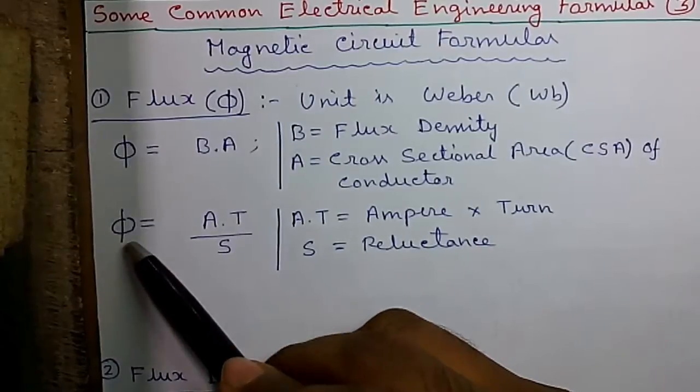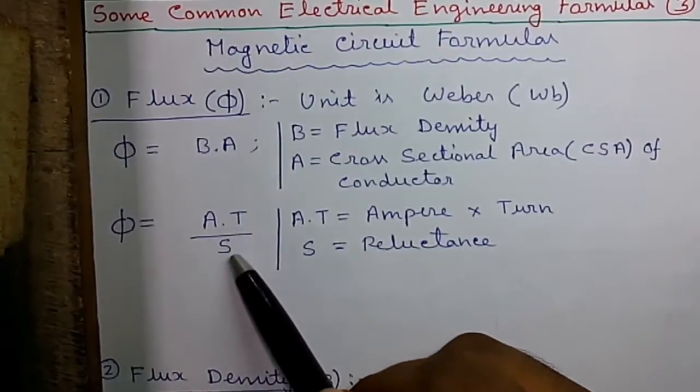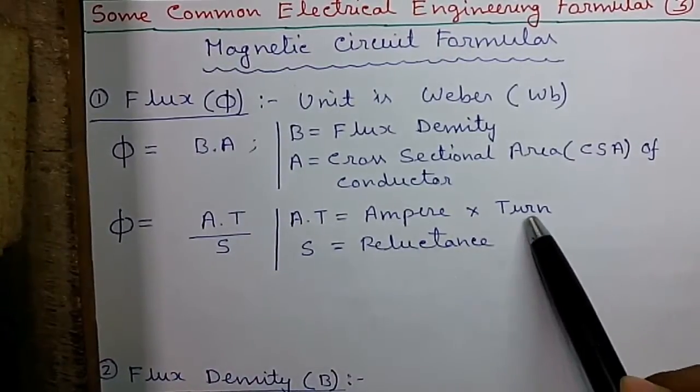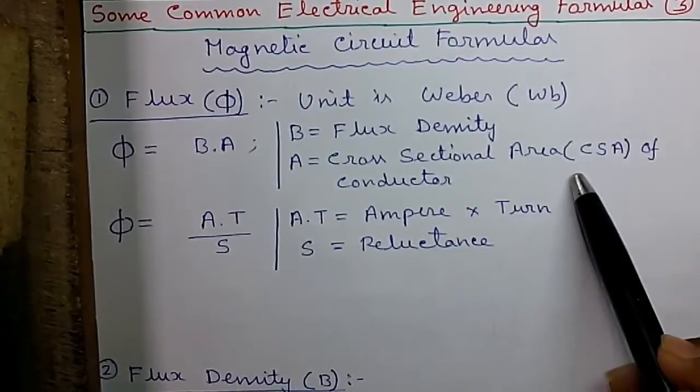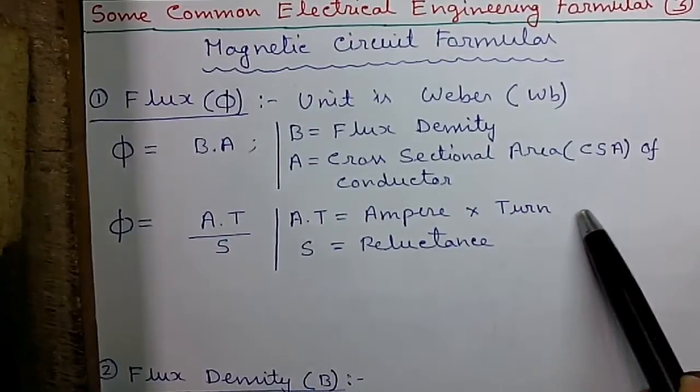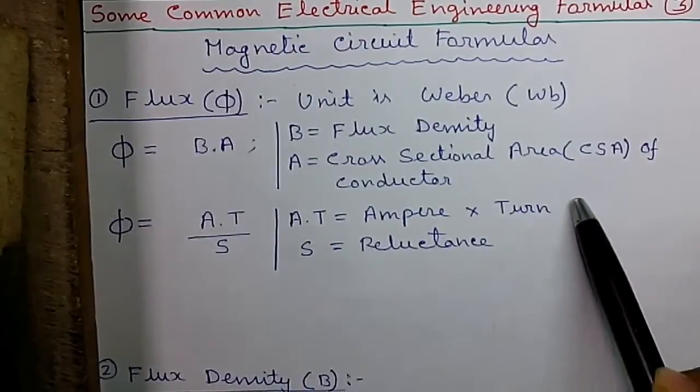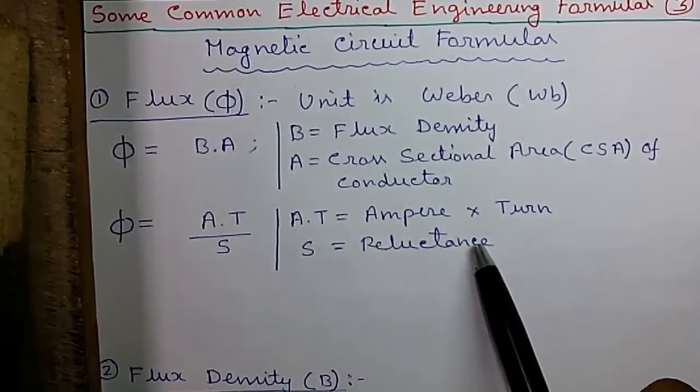Another formula for flux, phi equals to AT by S, where AT equals to ampere into turn. Ampere is the current flowing through the conductor and turn equals to number of turns of coil of the conductor and S is the reluctance.